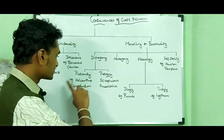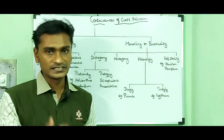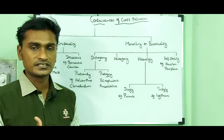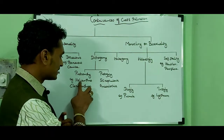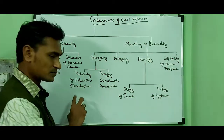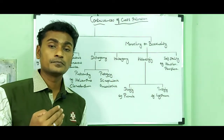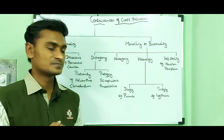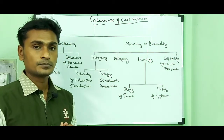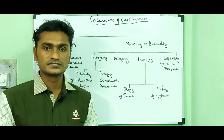Dichogamy is classified into two types: Protandry and Protogyny. Protandry means the maturation of andrecium before gynoecium — the stamen matures earlier compared to the gynoecium. Example: Helianthus (sunflower) and Clerodendrum. Protogyny means the maturation of gynoecium before andrecium. Examples: Scrophularia and Aristolochia bracteata. In both cases, the organs mature at different times, preventing self-pollination and promoting cross-pollination.